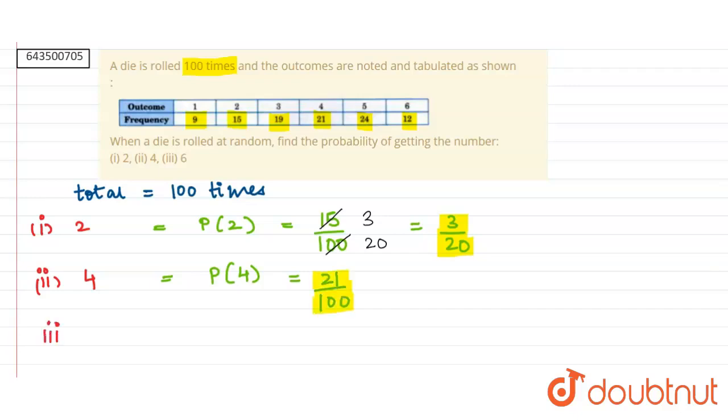In the third part, we have to find the probability of getting number 6, which equals P(6), which equals 12 upon 100. Hence, dividing by 4, we get 3 upon 25, and this is the answer for our third part.